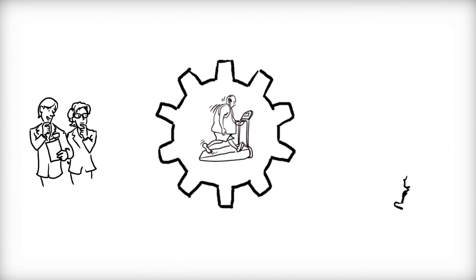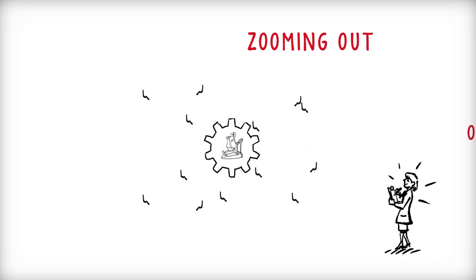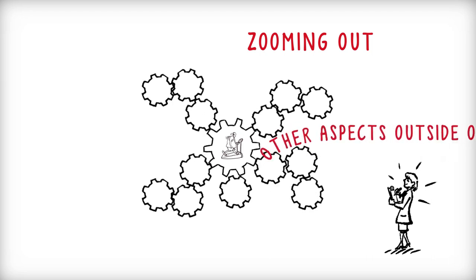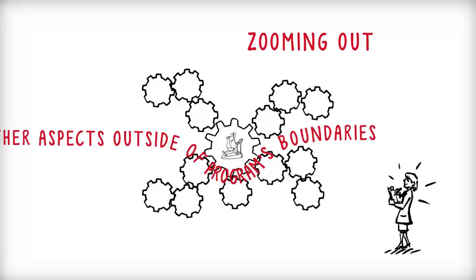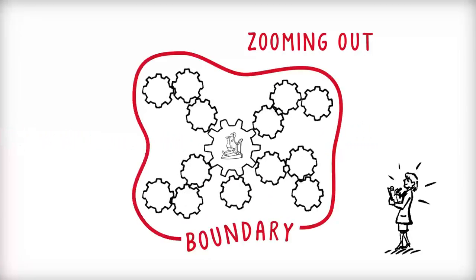senior managers and planners like Suzanne are in a unique position to do what systems thinkers call zooming out. Zooming out considers how other aspects outside of a program's traditional boundaries, both within the organization and beyond, might influence the success of the program.